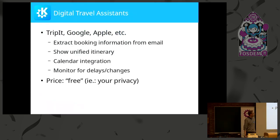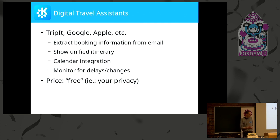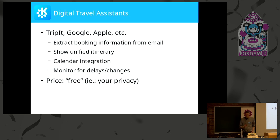What do we mean when we say that? You probably know services like TripIt or some of the travel assistance features in Google Now. They all more or less work the same — they read your email, they find tickets, boarding passes, bookings, that kind of stuff. They put it into your calendar or create a nice timeline, then guide you through that and give you real-time updates on delays. All of that is available for free, in the sense that you don't pay for it — at least not by money, but with your data.